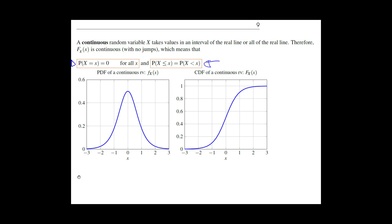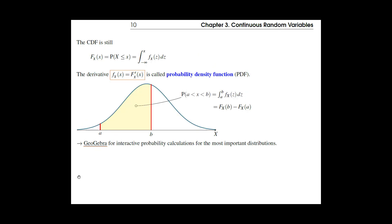Two important properties to know: first, the probability that X equals any given value is zero, because we're defining the outcomes on the real line and there are infinitely many real numbers. This means that strict inequalities and non-strict inequalities are equivalent — the probability of X equaling a particular number is zero, so in this chapter we don't need to worry about strict inequalities. The CDF still has the same definition, but now we replace summations by integrals.